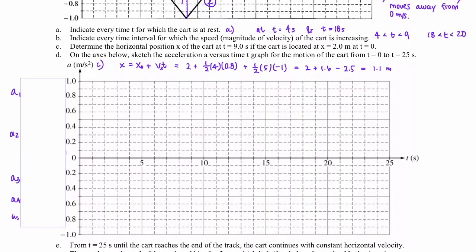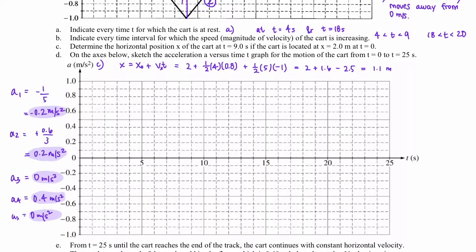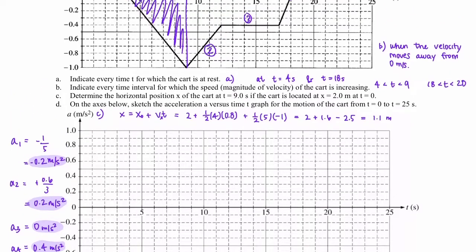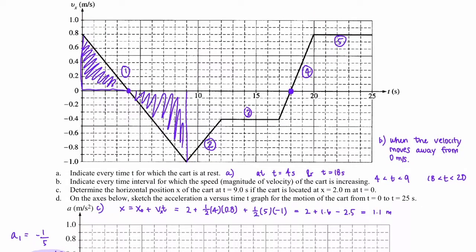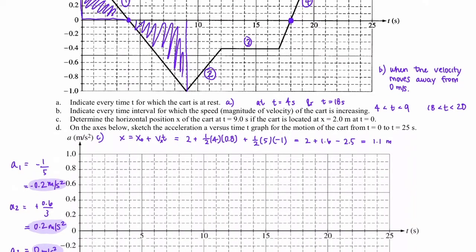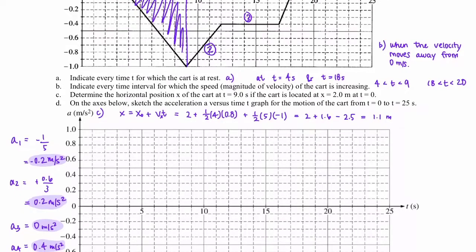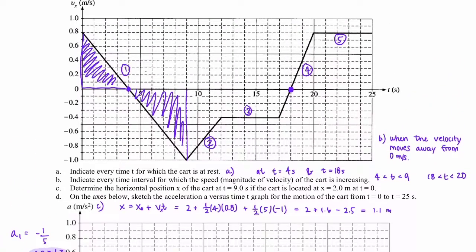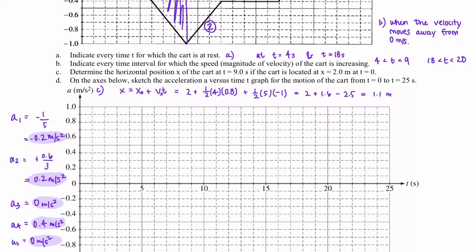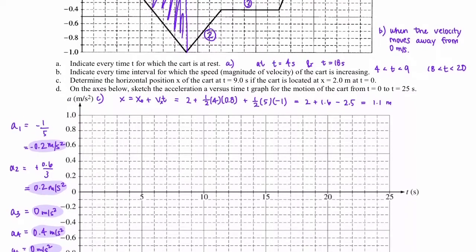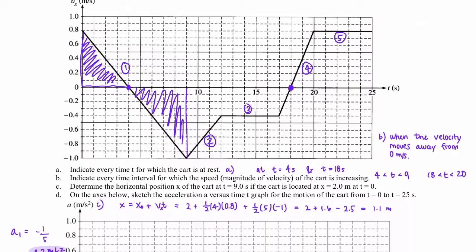For acceleration 1, the slope is negative: negative 0.2 m/s². For acceleration 2, the slope is positive, and using rise over run we get 0.2 m/s². Segment 3 has no slope, so the acceleration is zero. For segment 4, we have a positive slope and the acceleration is 0.4 m/s². And for segment 5, we again have a zero slope, so the acceleration is zero.